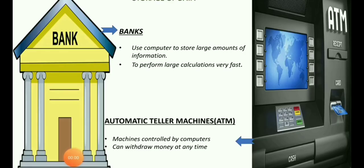Our first topic is about banks. Did you ever visit a bank? Yes, I think most of you have visited. Did you see computers there? So did you ever think why they are using computers there? We use computers in banks to store large amounts of information — like how many customers are there, and all their details are stored in the computer. We can also do a large number of calculations very fast using the computer, because there are lots of money transactions going on in the bank, so we have to calculate a lot. These are done using computers.